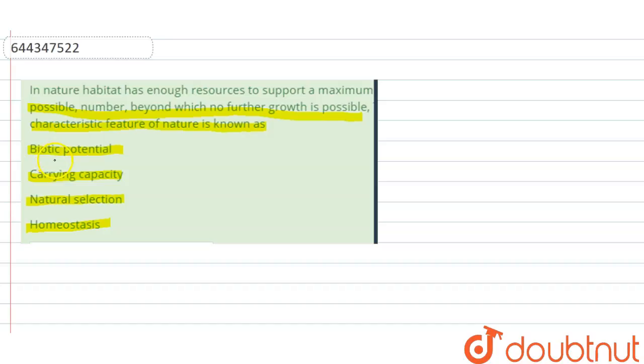Biotic potential is the highest possible vital index of a species. Therefore, when the species has its highest birth rate and lowest mortality rate, that time is known as the biotic potential. So the biotic potential